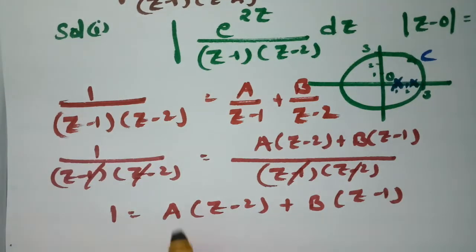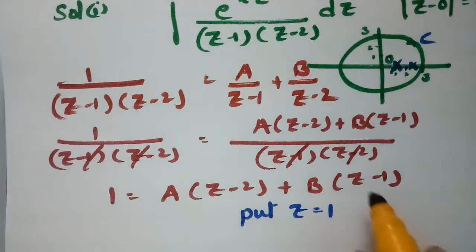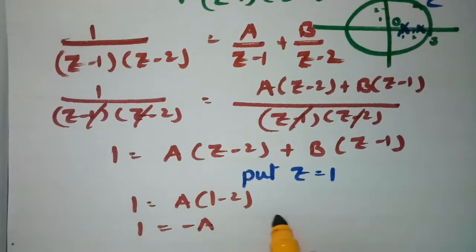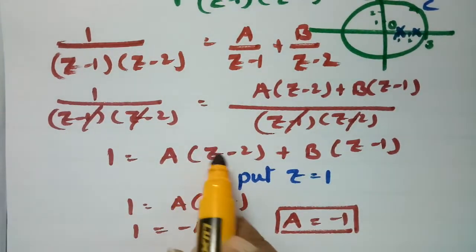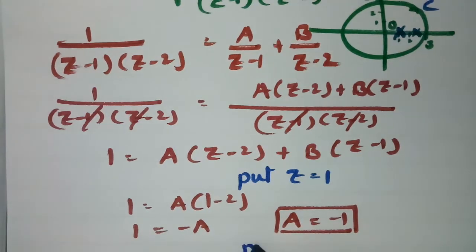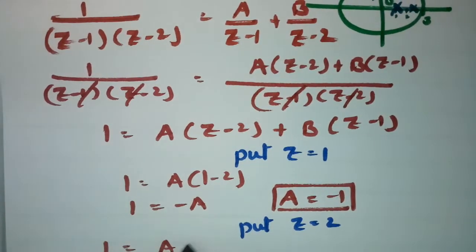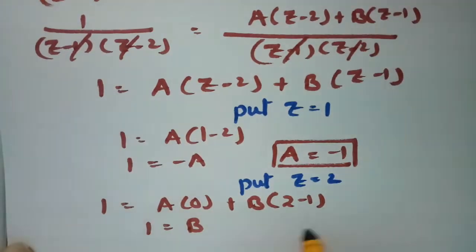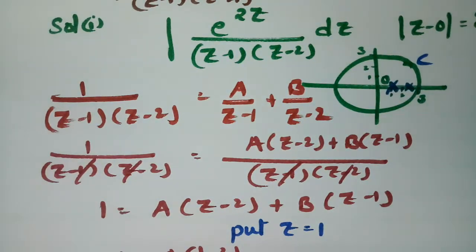To find A, put z = 1: 1 = A(1-2) = -A, so A = -1. To find B, put z = 2: 1 = B(2-1) = B, so B = 1. After substituting: 1/[(z-1)(z-2)] = -1/(z-1) + 1/(z-2).